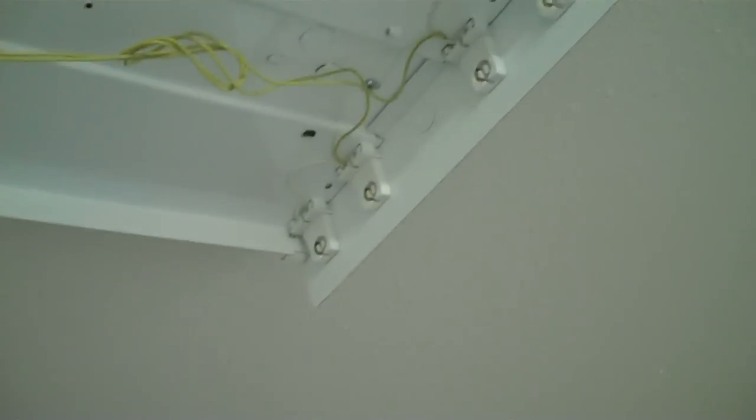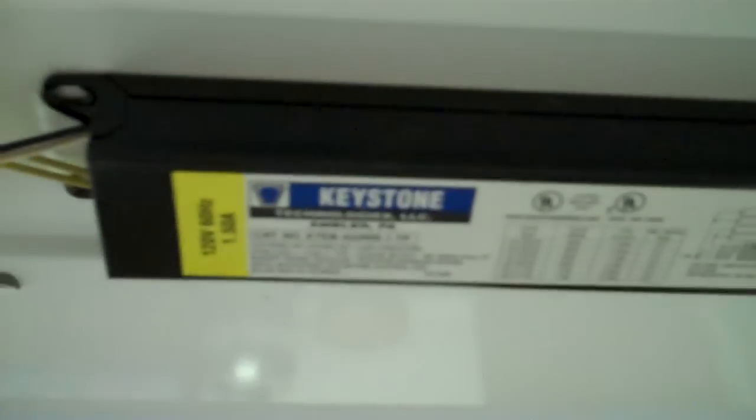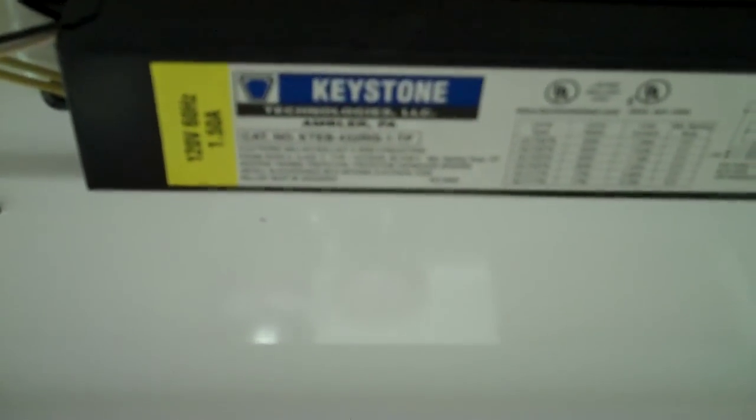As you can see there's red and blue wires on one side, yellow wires on the opposite side, and black and white wires which are the power wires. The present ballast in this system is called Keystone Technologies from Ambler, Pennsylvania, and it is a true piece of junk. They just don't last.